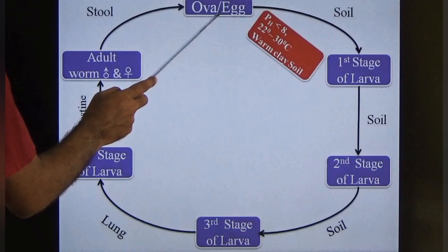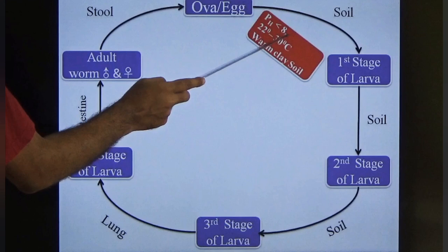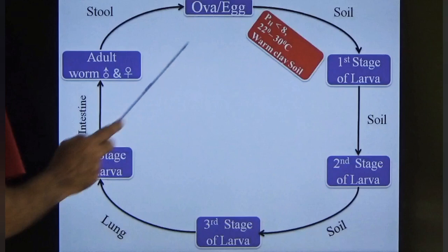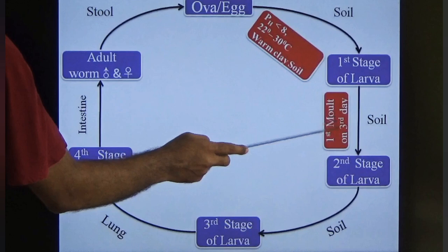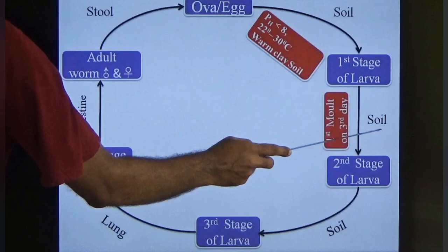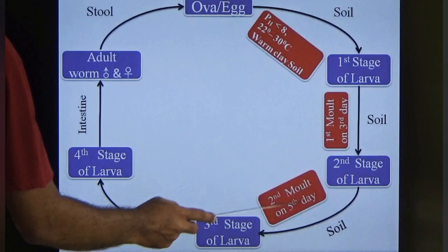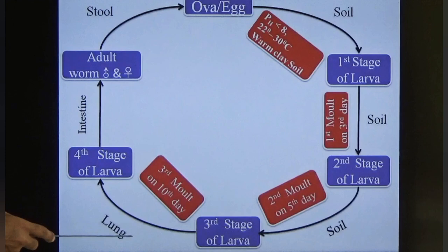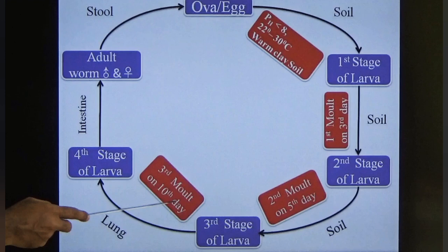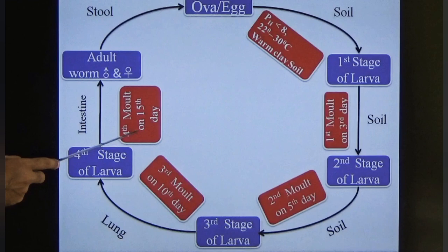The ova develop in soil with pH less than 8, temperature 20–30°C, in warm moist soil. Within 3–5 days the ova become first-stage larvae. First molding on day 3 produces second-stage larvae. Second molding on day 5 produces third-stage larvae — the infective form. The third-stage larvae migrate via the lungs; fourth-stage larvae form by third molding on day 10. The fourth-stage larvae become adult worms by fourth molding on day 15 in the intestine.